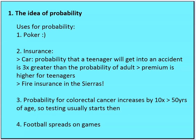Insurance is another use for probability. The probability that a teenager will get into an accident is three times greater than the probability of an adult, so the premium for teenagers is much higher — and the premium for teenage boys is higher than teenage girls. Also, if you try to get fire insurance in the Sierras, it's very challenging or expensive. There are a lot of restrictions around insurance purchase because the probability of wildfires in the West is very high given the state of drought and global warming.